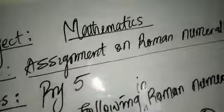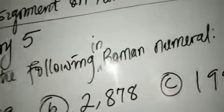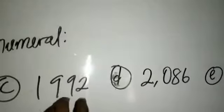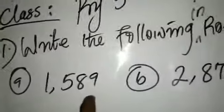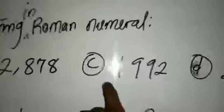A: 1,589. B: 2,878. C: 1,992. D: 2,086. E: 106. I'll go again: A: 1,589. B: 2,878. C: 1,992. D: 2,086. E: 106.